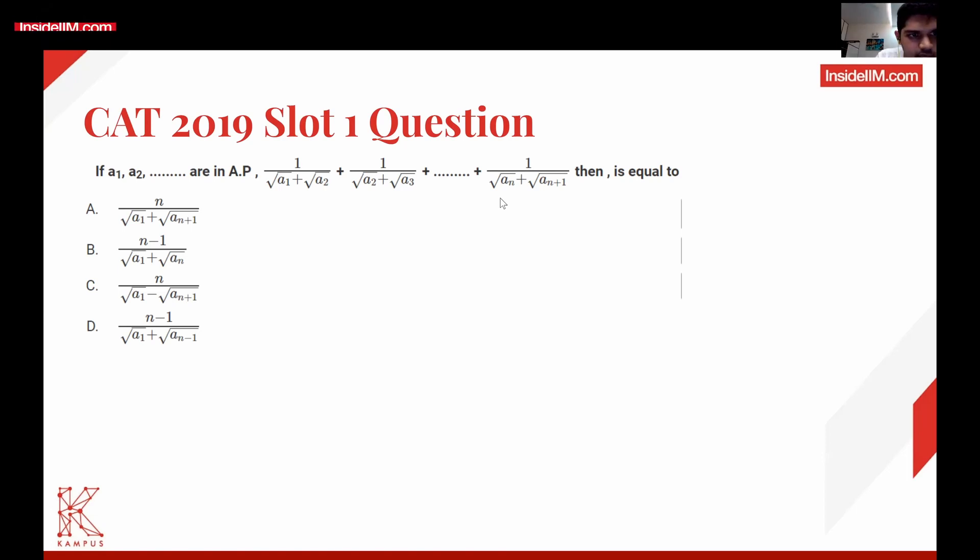If you put n = 1, A is the only option that satisfies it, because all the other terms never come to the first term. In case they want you to work a bit more and give two options that both satisfy the first term when you put n = 1, then just try n = 2 next. You don't need to use some AP formula and try to get this series.